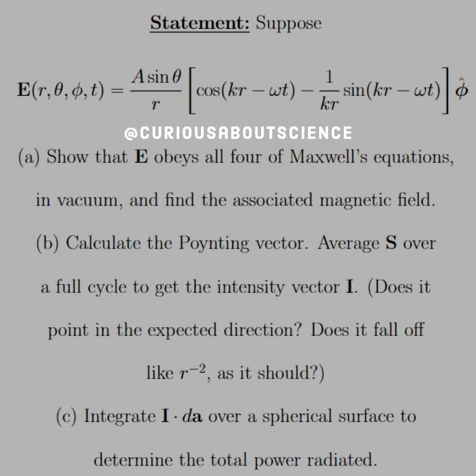Part B: Calculate the Poynting vector, average S over a full cycle to get the intensity vector I. Does it point in the expected direction? Does it fall off like r⁻² as it should? And Part C: Integrate I·dA over a spherical surface to determine the total power radiated.